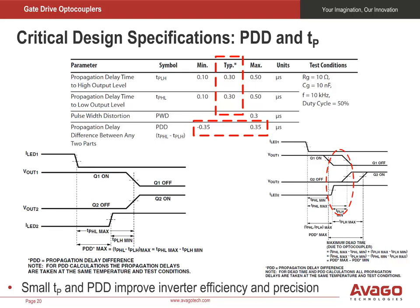Propagation delay and propagation delay difference between two parts are very important specifications, as they set how fast the switching speed can be for a gate driver. For any half-bridge circuit, the top switch must be fully turned off before the bottom switch can be turned on, and vice versa. Q1 is fully turned off before Q2 is turned on. The propagation delay of channel 1, TPHL, must be the longest, or TPHL max. Similarly, the propagation delay of channel 2, TPLH, must be the shortest, or TPLH min. This prevents cross-conduction or punch-through current.